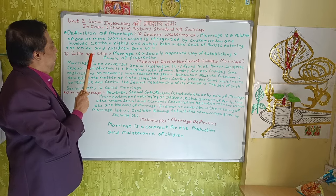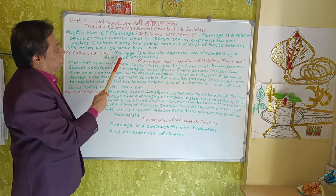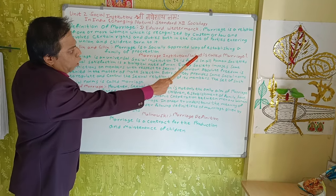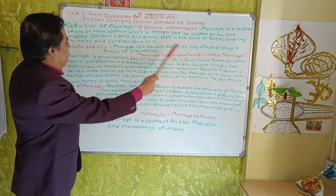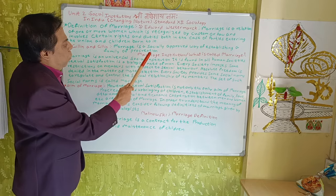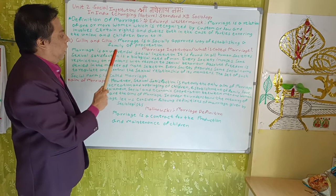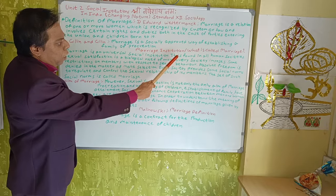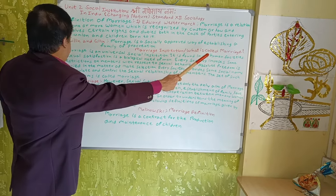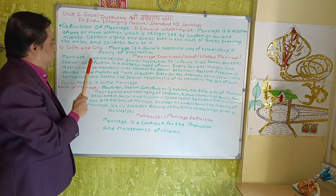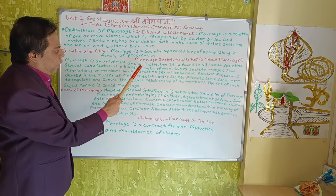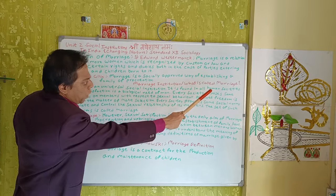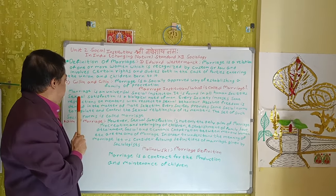Gillian and Gillian: Marriage is a socially approved way of establishing a family of procreation. Marriage is a universal social institution. It is found in all human societies.